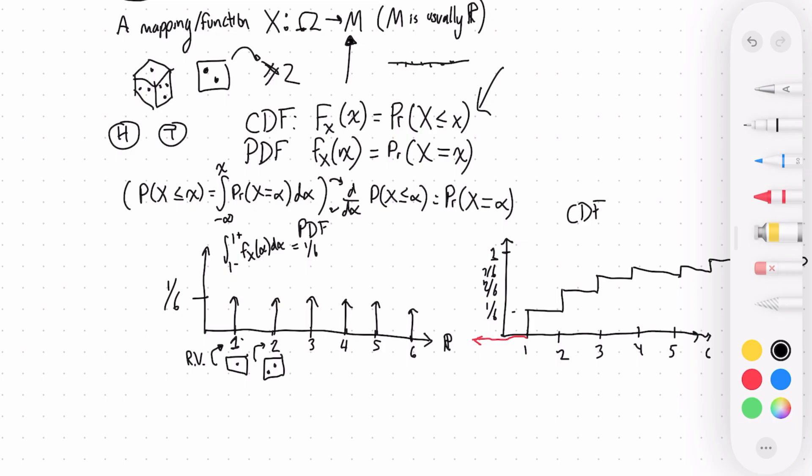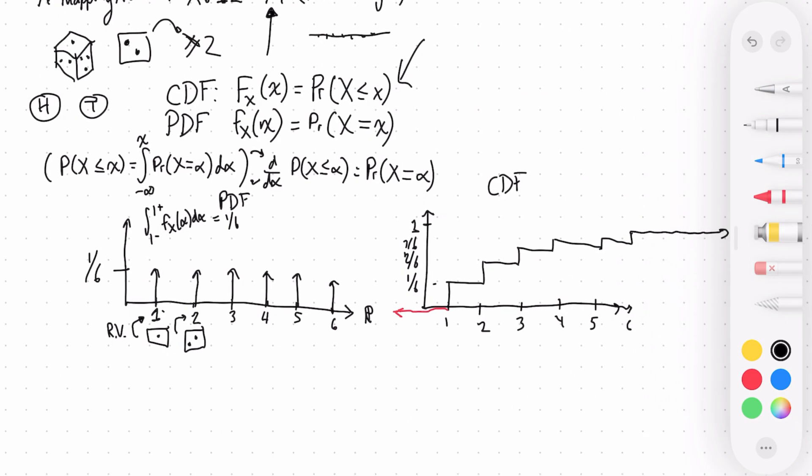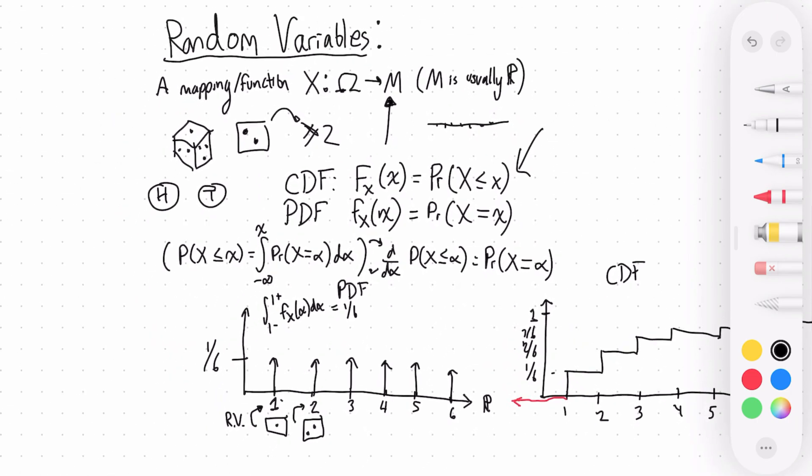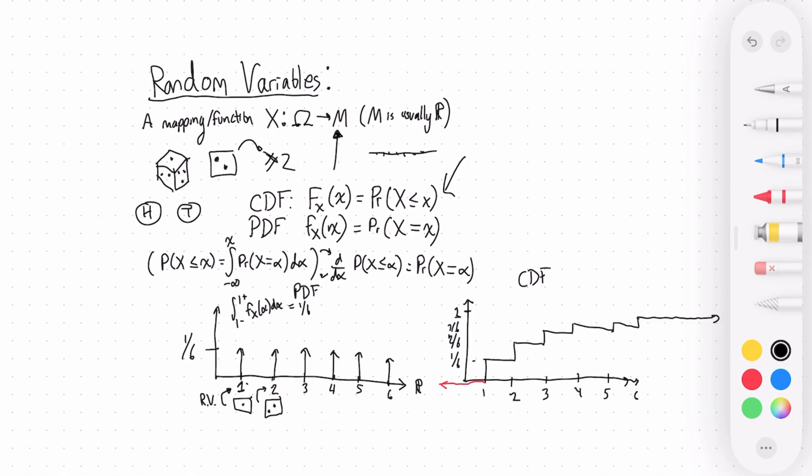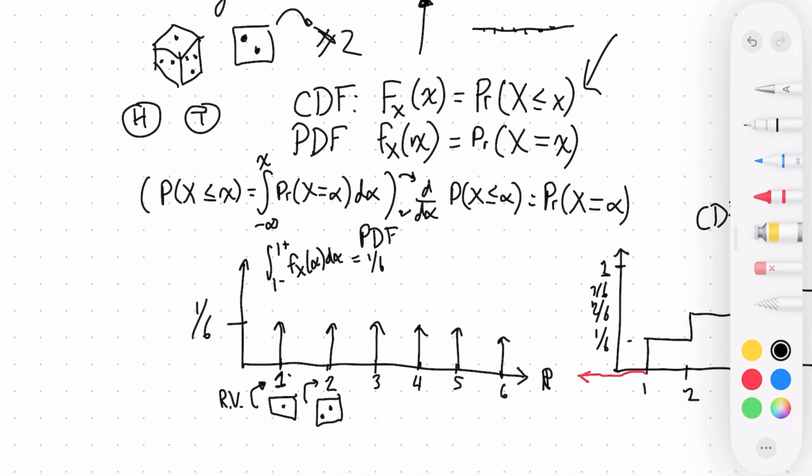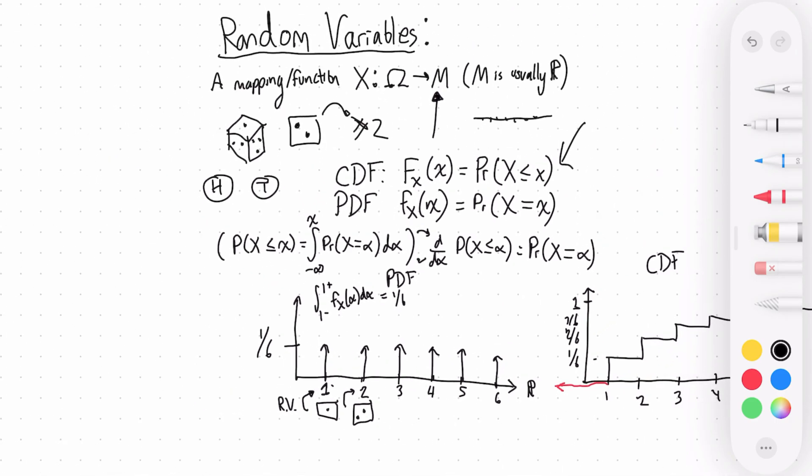We can just basically assume that it has an infinitely tall height with area from the minus side and plus side of fx of alpha d alpha basically equal to one-sixth. And similarly our CDF is going to be extended like this. So once again, what the random variable allows us to do is to map outcomes to numbers, which then now we can go ahead and do all of our nice numerical calculations with them, PDFs, CDFs, and the relationship.